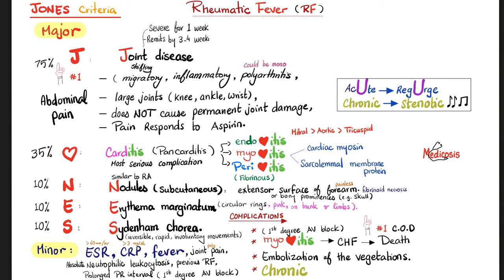The major criterion of joint disease has specific characteristics: it is severe, lasts about one week, disappears after three to four weeks, and is migratory — jumping from hip to knee to shoulder to elbow. It is inflammatory polyarthritis affecting large joints like the knee, ankle, and wrist rather than smaller finger joints. It causes pain, responds beautifully to aspirin, and leaves no permanent joint deformity. Joint disease is actually the most common symptom — present in about three-quarters of patients with rheumatic fever.